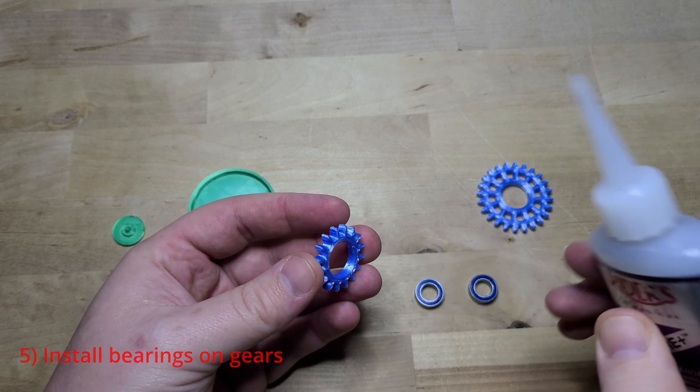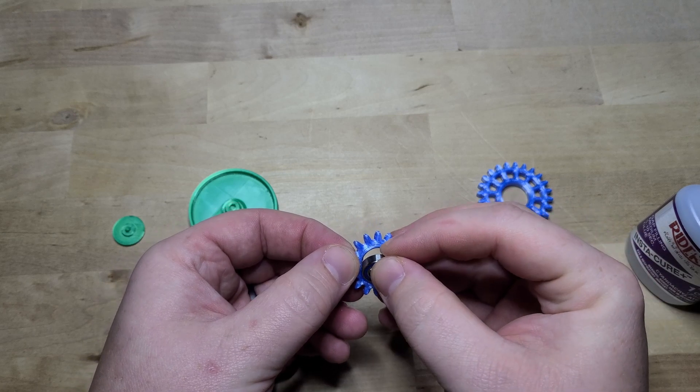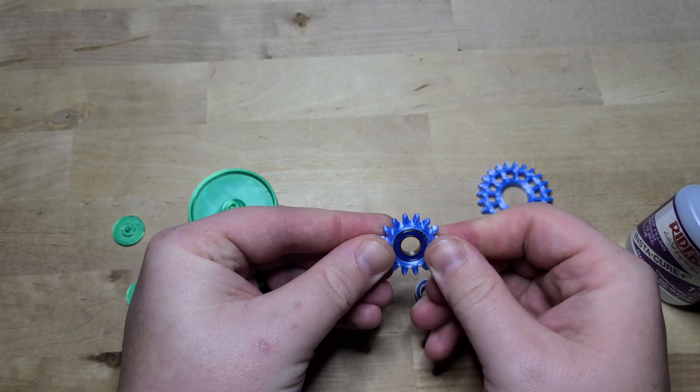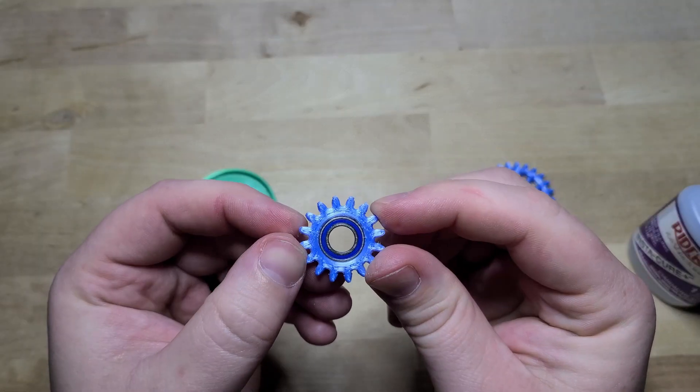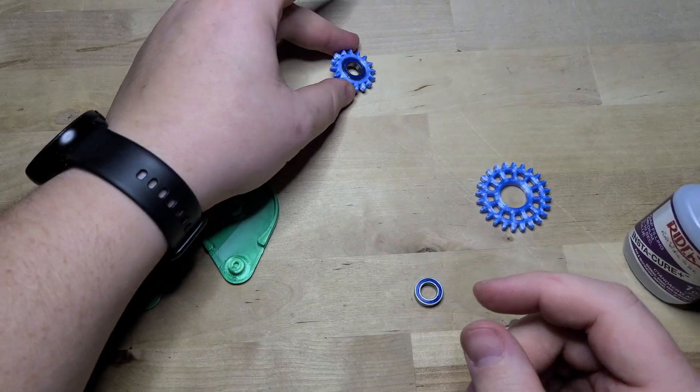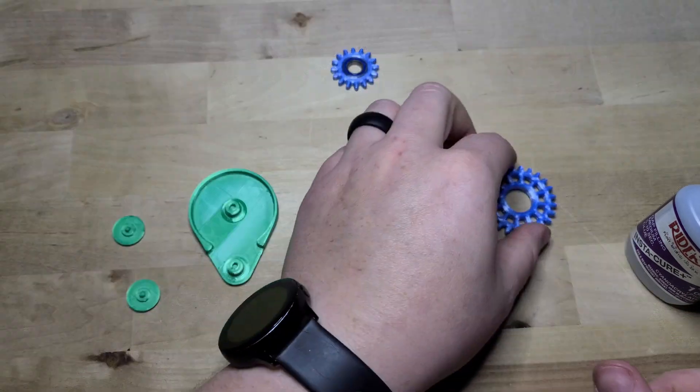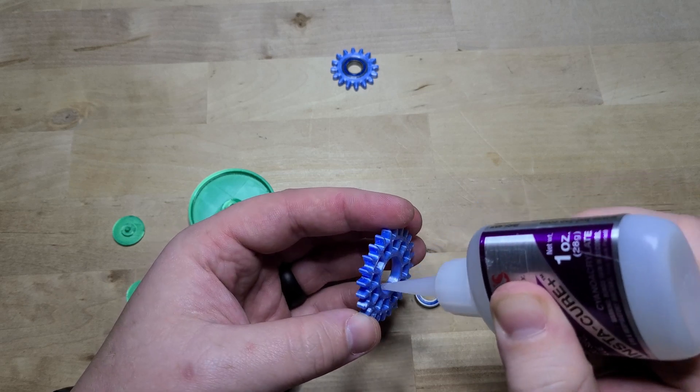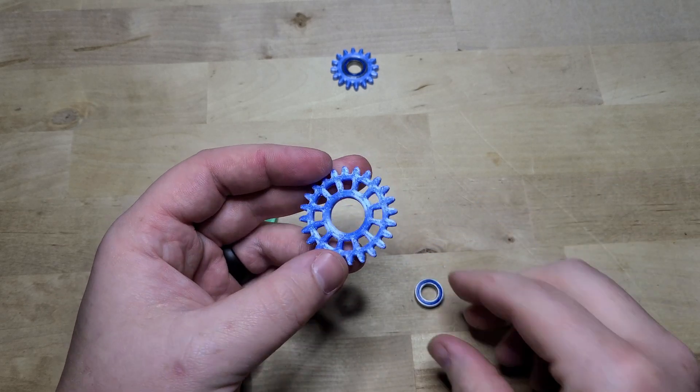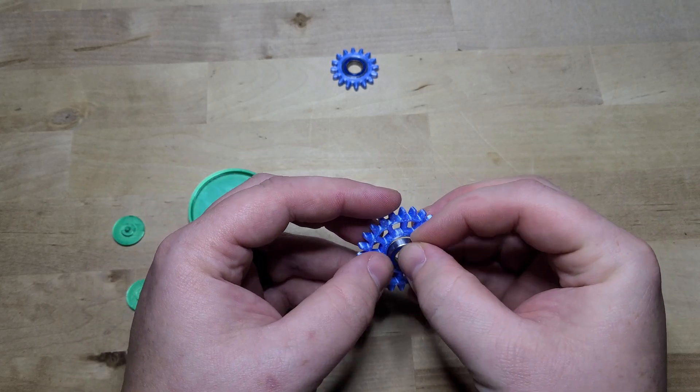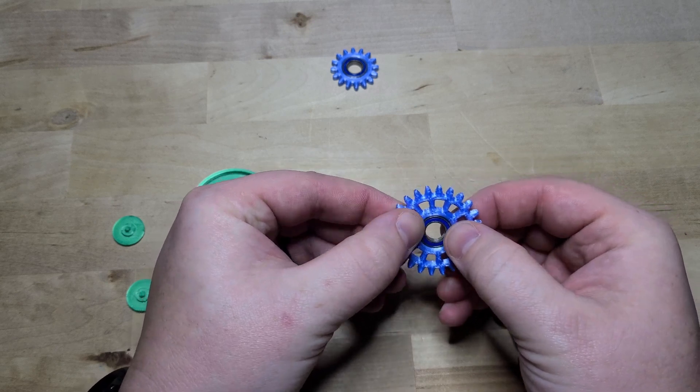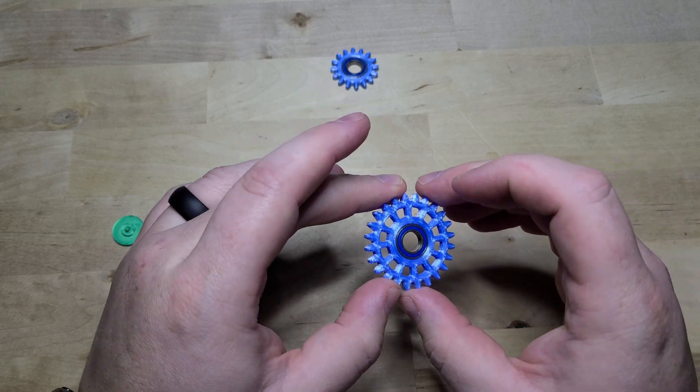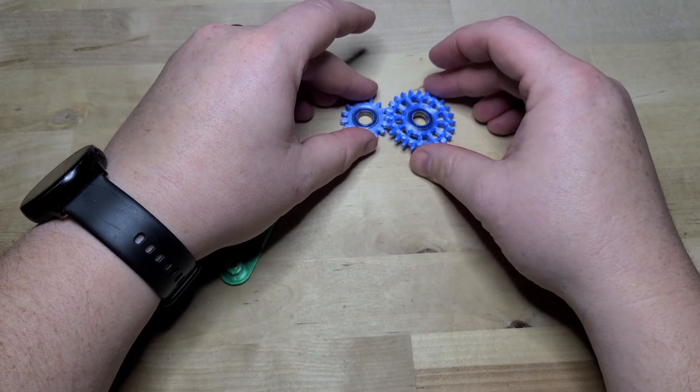Apply the glue to the gear and press in the ball bearings. Be sure that the bearings are pressed in flush so that the gear will spin evenly, and allow the glue to dry completely.